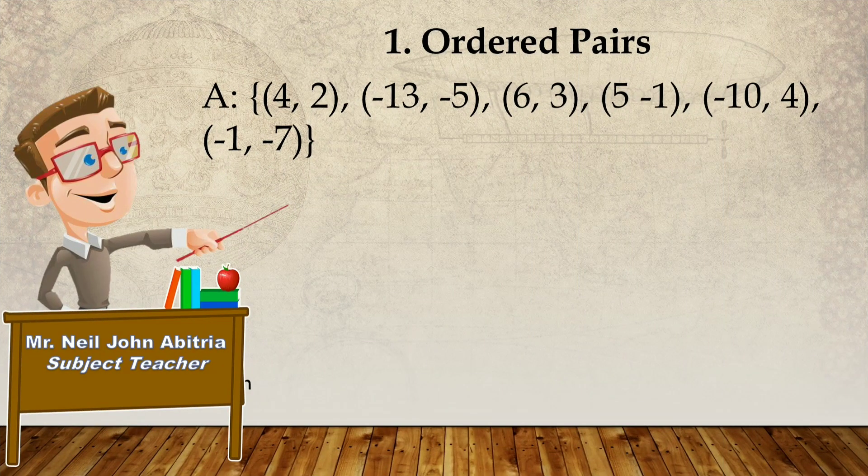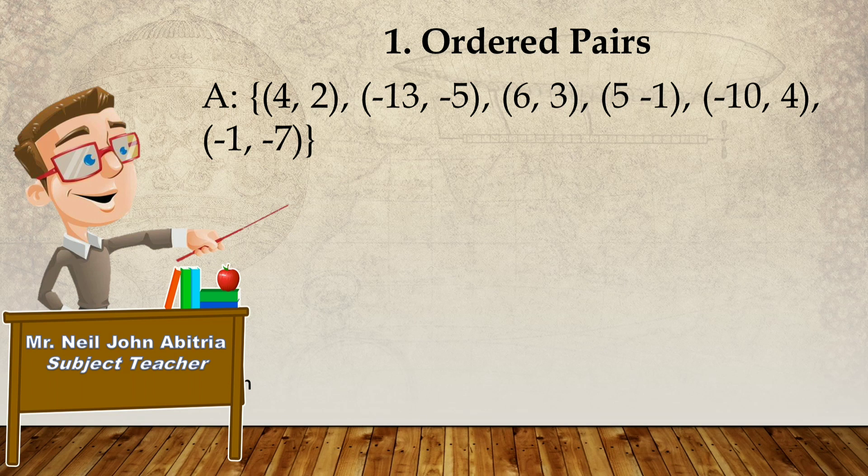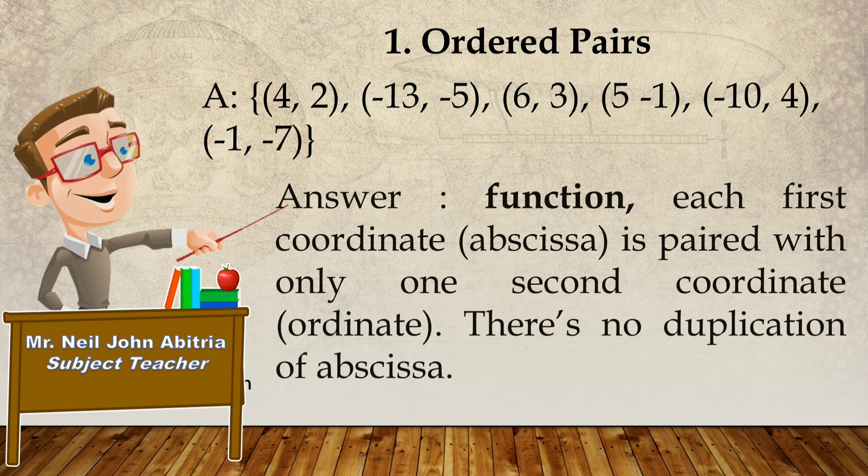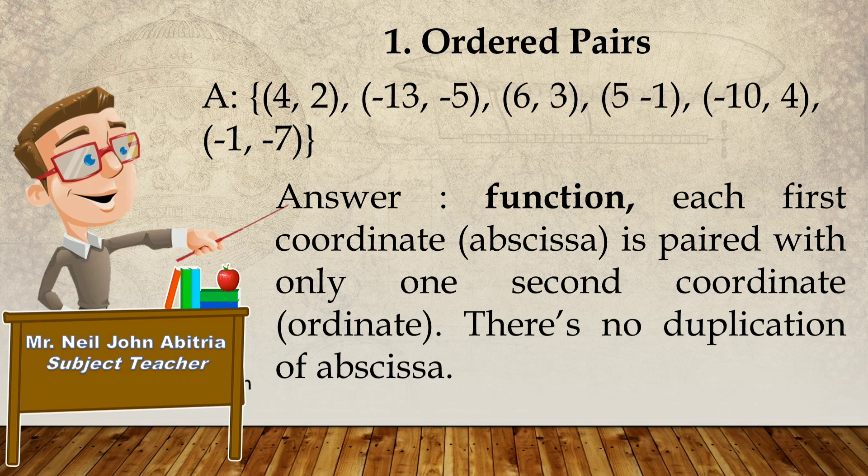So, number one, by ordered pairs, letter A. Do you think, is it a relation or a function? Very good. The answer is function. Because each first coordinate or abscissa is paired with only one second coordinate or ordinate. There is no duplication of abscissa.